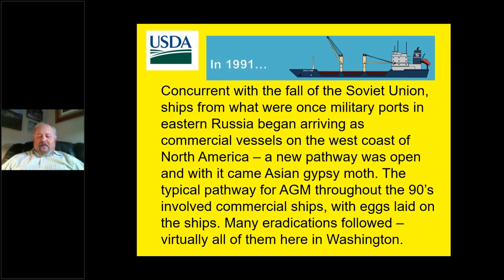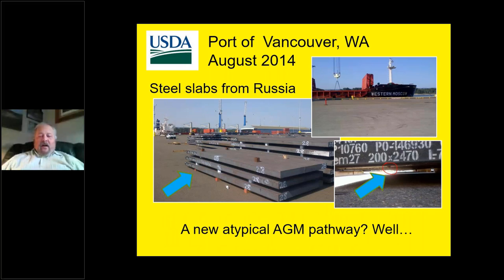The typical pathway for Asian gypsy moth throughout the 1990s involved commercial ships with eggs laid on those ships. Many eradications followed, and virtually all of them were here in Washington. Fast-forwarding a few years, we had an example in the port of Vancouver, Washington in 2014 involving steel slabs from Russia — as big or bigger than a bus. Customs and Border Protection inspectors examining these slabs found Asian gypsy moth egg masses on them. This was movement of materials from Asia, but there were certain differences.